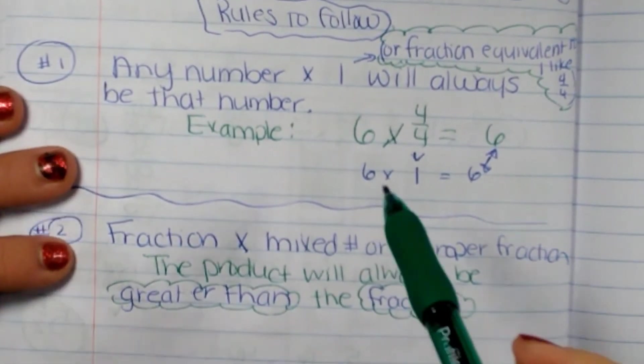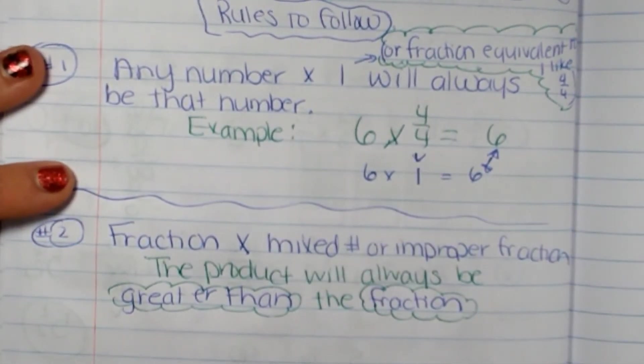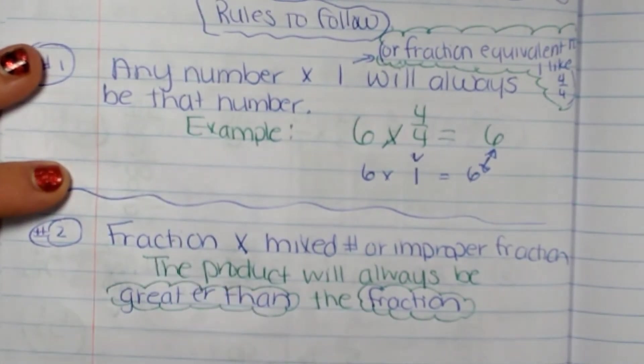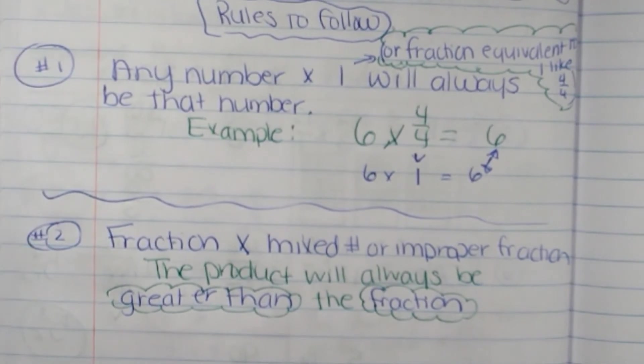And that is because a mixed number or improper fraction is more than one. So if I'm multiplying a fraction by one, it should be that fraction. But if I'm multiplying by a number that is more than one, then it's going to be more than that fraction. So here's an example.